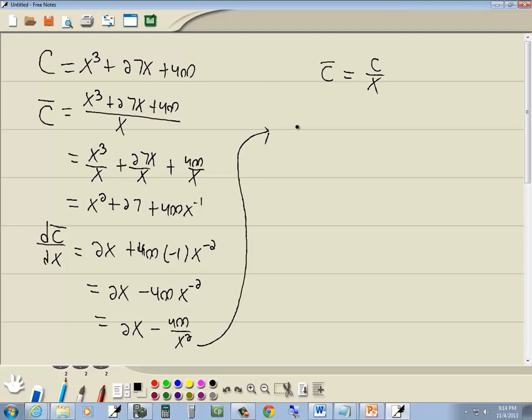Now we want to merge these into a single fraction. So I can put the 2x over 1 minus 400 over x squared. Multiply top and bottom by x squared and we get 2x to the third over x squared minus 400 over x squared. Merge these into a single fraction and we get 2x to the third minus 400 all over x squared.